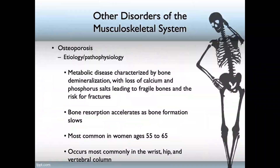Let's review the different risk factors, signs and symptoms, and be able to differentiate between the two. Osteoporosis is a metabolic disease characterized by bone demineralization, with the loss of calcium and phosphorus salts leading to fragile bones and the risk for fractures. This happens because bone reabsorption accelerates at the same time that bone formation slows, and it is most common in women from the ages of 55 to 65. It occurs most commonly in the wrist, the hip, and the vertebral column.